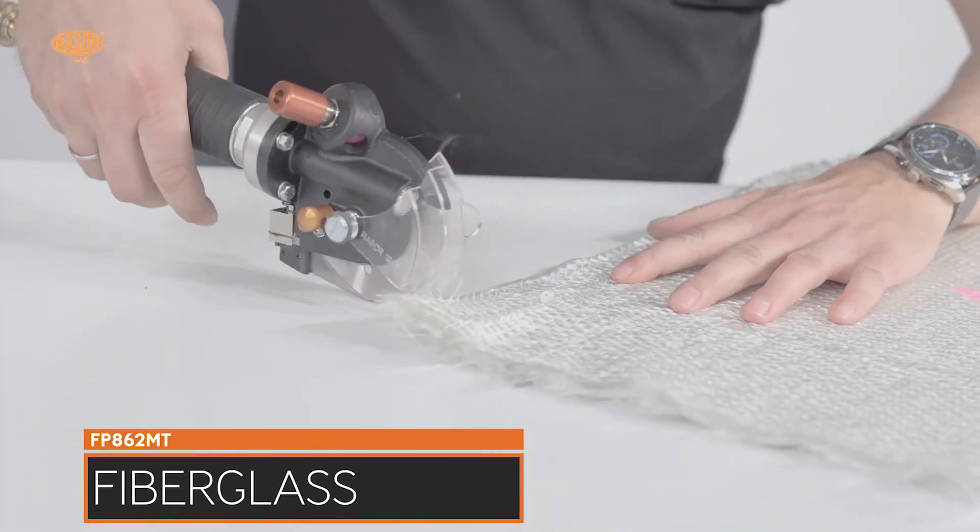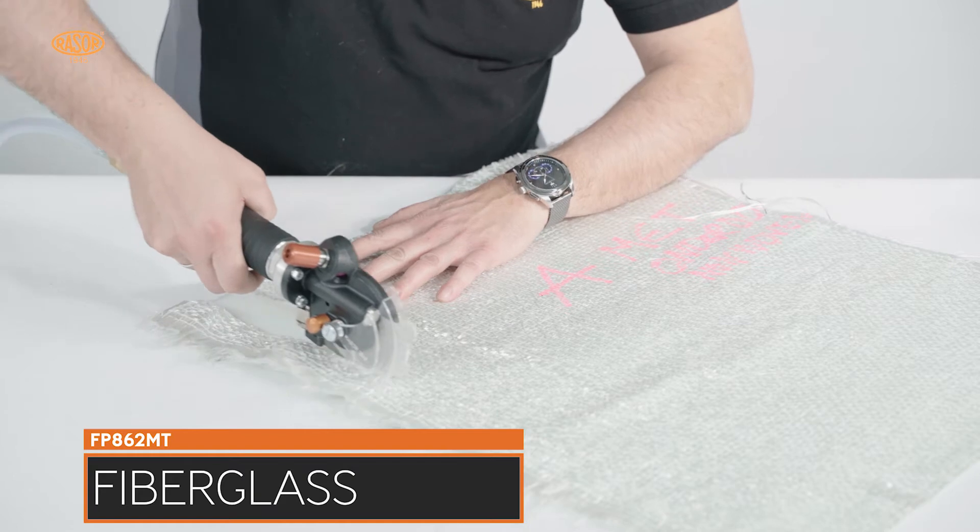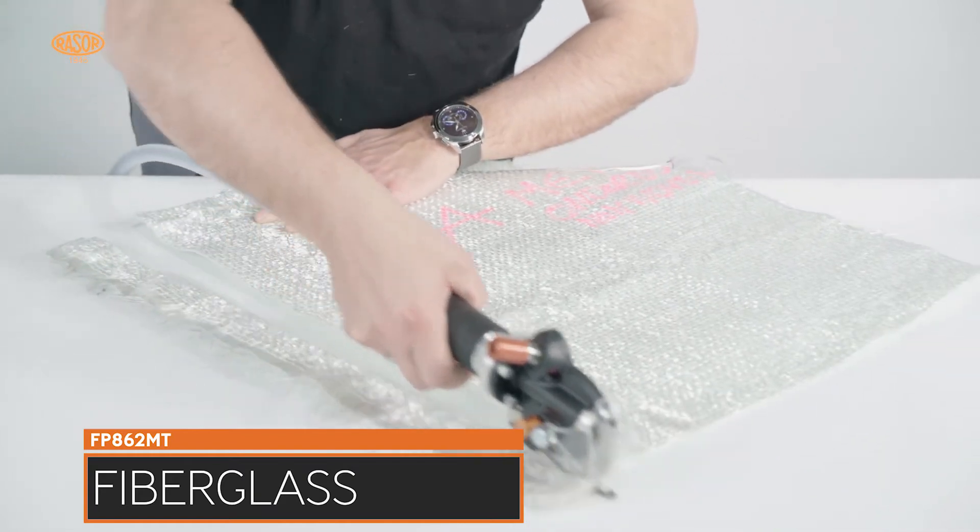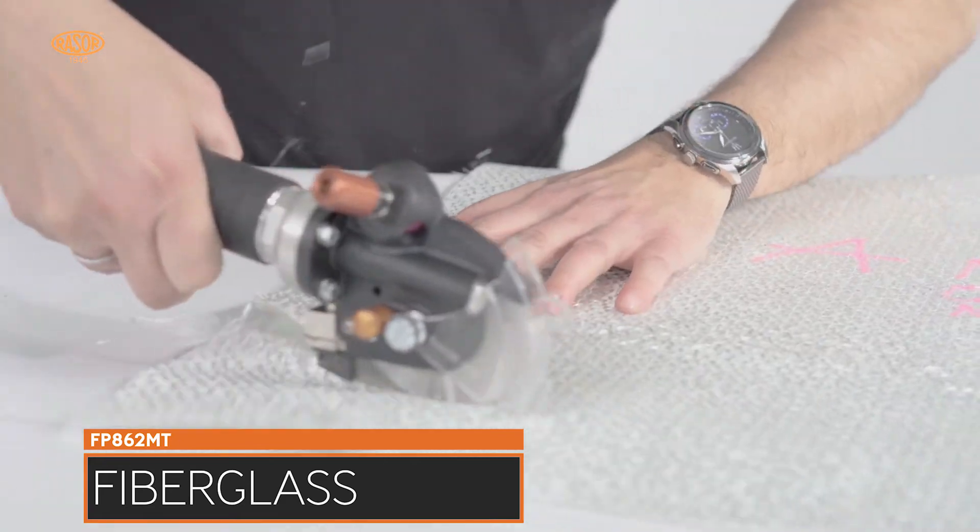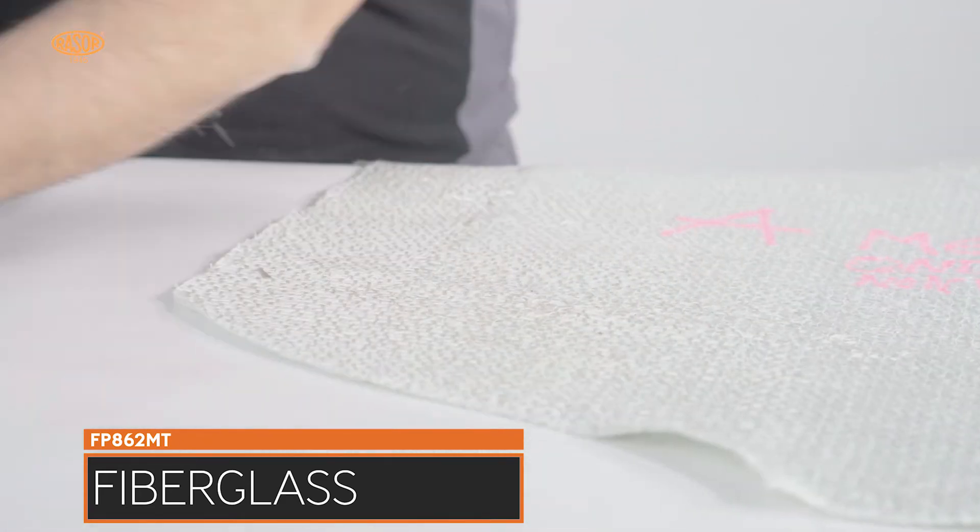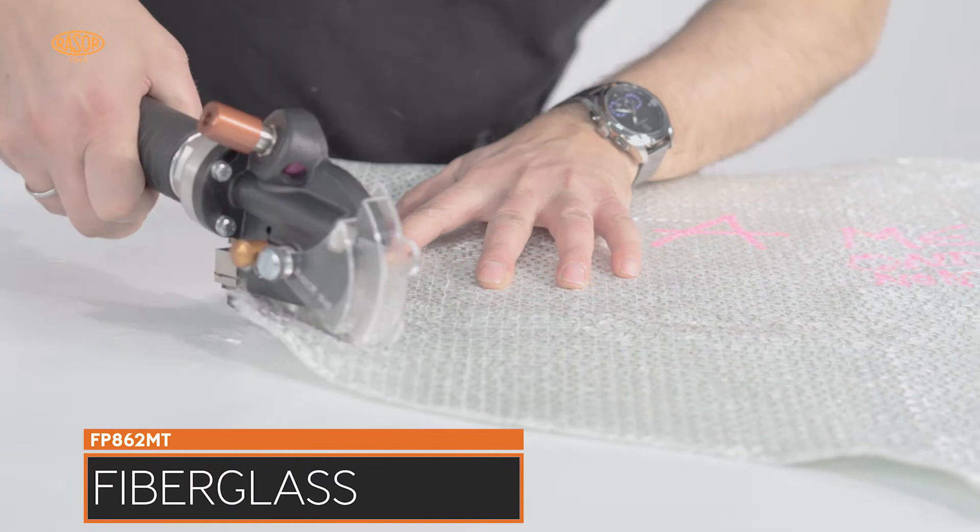The FP862MT cuts heavy-duty technical textiles and composites. The machine cuts aramide, fiberglass, and carbon fiber in single and multiple layers with ease, straight and in curves.